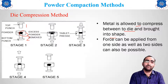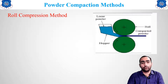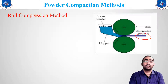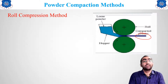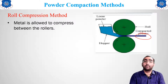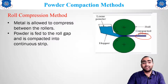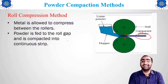The second method is roll compression. Powder is placed between two rolls and moved through them to produce a compressed part. This method is used mainly for manufacturing flat sheets and continuous long strips. The thickness of the sheet depends on the gap between the rollers.